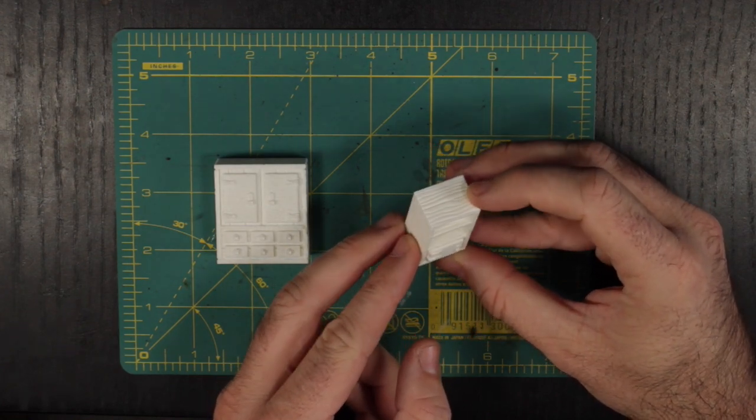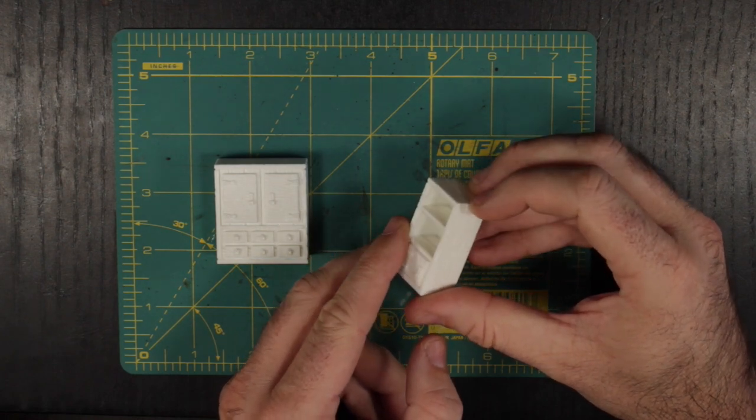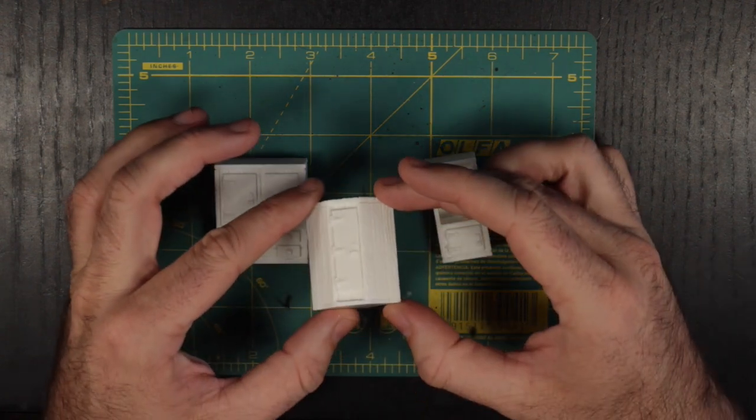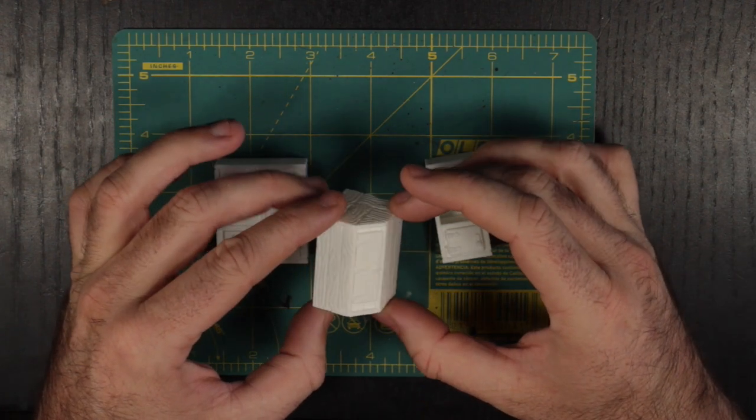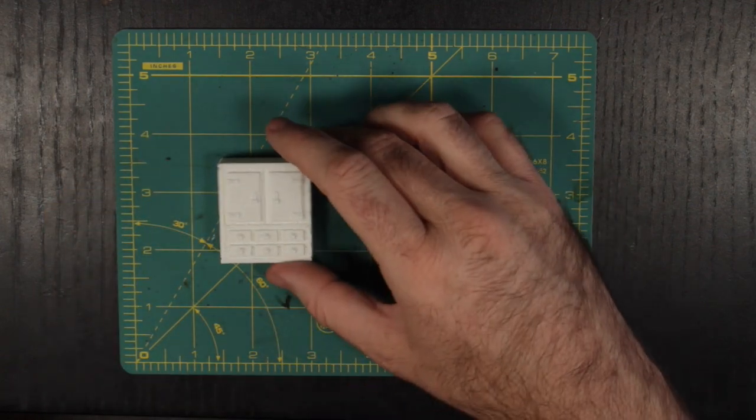Typically, when painting scenery like this, you aren't painting a single model. Instead, you are looking at anywhere from 5 to even sometimes 20 pieces. So today we are going to look at quick and simple techniques that will give you fantastic looking scenery ready by game night.